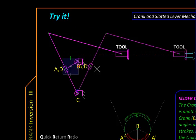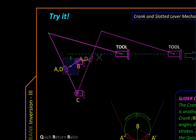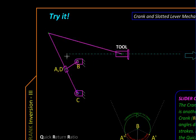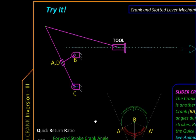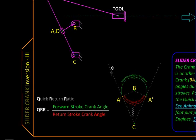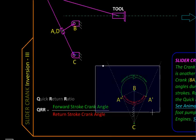Like inversion number two, we can get a quick return characteristic over here. The quick return ratio of this mechanism can be evaluated using the two extreme positions of the guide, which is usually a link with a slot in which the slider slides. These two extreme positions are nothing but tangents to the circular path of the slider.